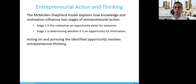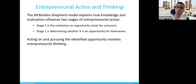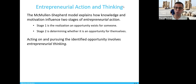As an entrepreneur, you need to have entrepreneurial action and entrepreneurial thinking. The Mullen-Shipper model explains how knowledge and motivation influence the two stages of entrepreneurship. The first stage is the realization that an opportunity exists for someone — as an entrepreneur, you recognize that there might be an opportunity, for example in higher education solutions. The second stage is determining whether that opportunity is for yourself or for others.